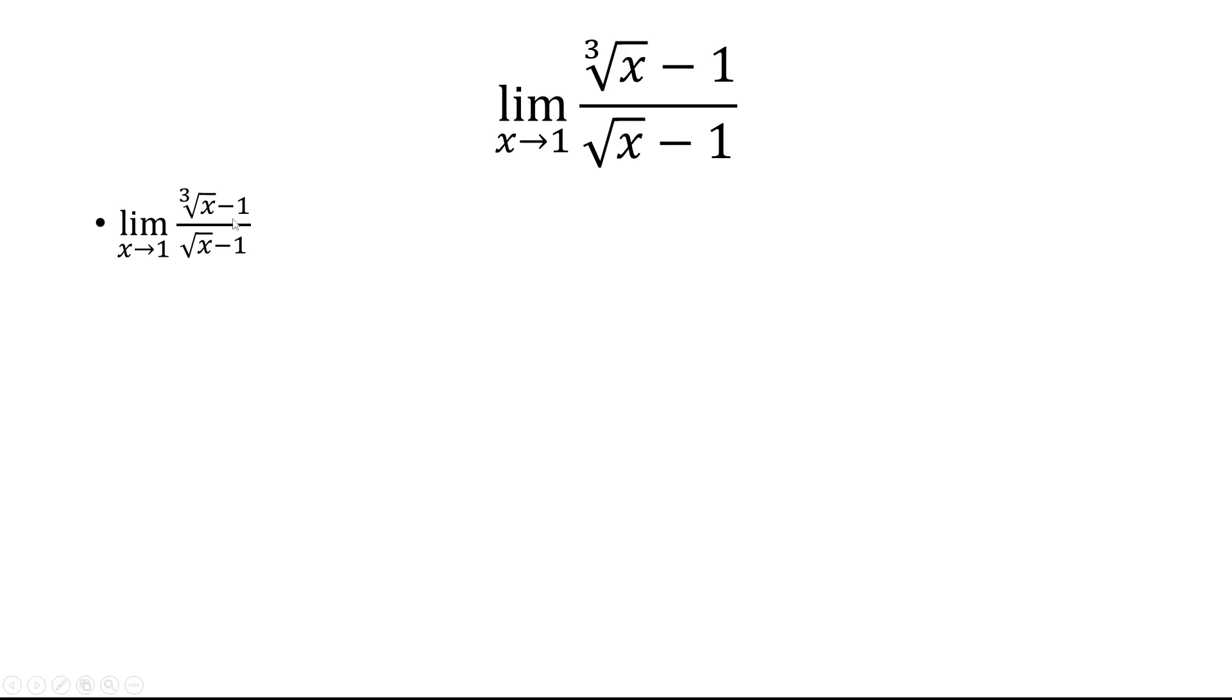Keep in mind, we have a cube root of x and a square root of x. So that's going to be x to the 1/3 and x to the 1/2. Think about what do 1/3 and 1/2 have in common? What's the common denominator? Well, that's going to be 1/6. So we'll let u equal x to the 1/6, or in other words, the 6th root of x.